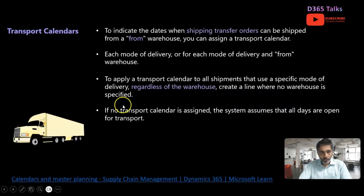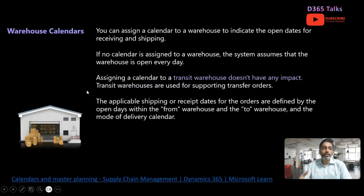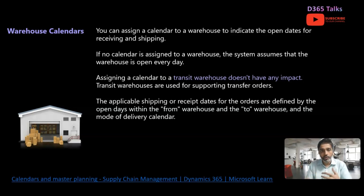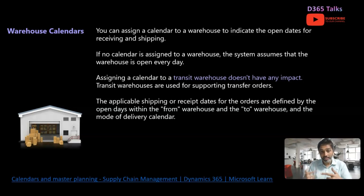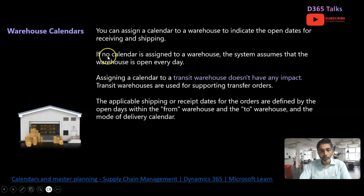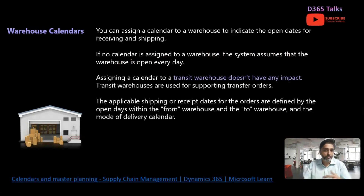The third important calendar is the warehouse calendar. If you are a retail, manufacturing, or distribution company, you need to configure the calendar for your warehouse operations to indicate the open dates for receiving and shipping materials. The master planning engine generates the receipt dates based on the warehouse operating days. If no calendar is assigned to your warehouse, the system assumes the warehouse is open every day — similar to the transportation calendar default behavior.